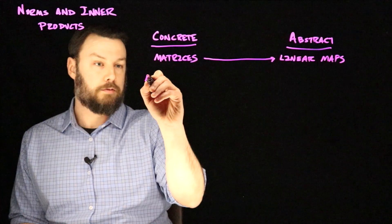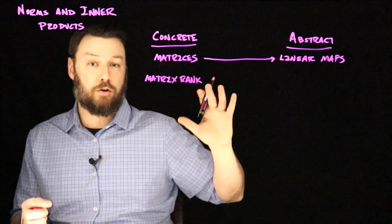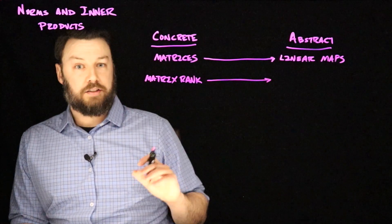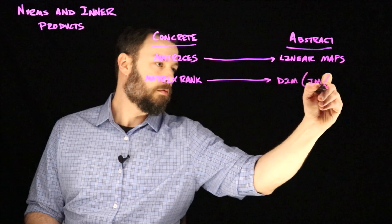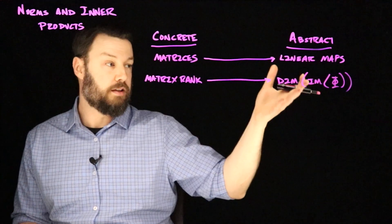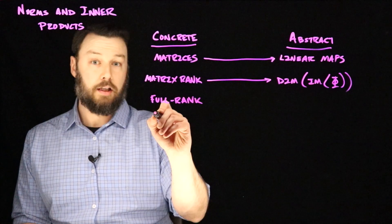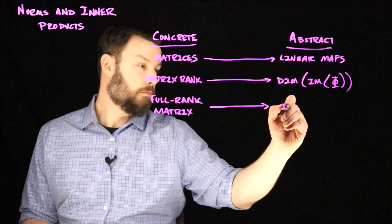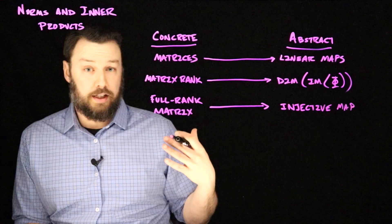Similarly, we sometimes talk about rank. The equivalent of matrix rank in the more general abstract language is the dimension of the image of the map. If the map is represented by phi and we talk about the image, then the generalized notion of rank is the dimension of that image. What does it mean for something to be full rank? In the abstract, that's saying we have an injective map.